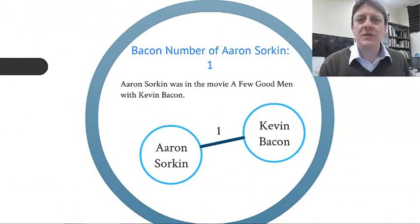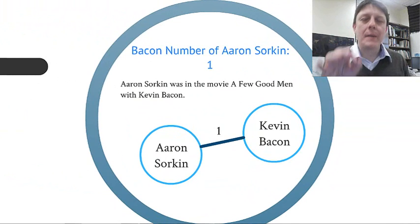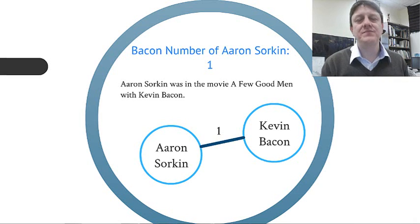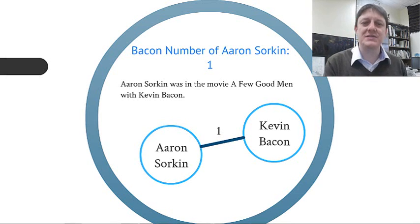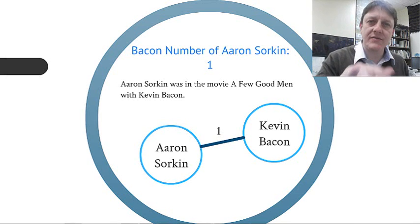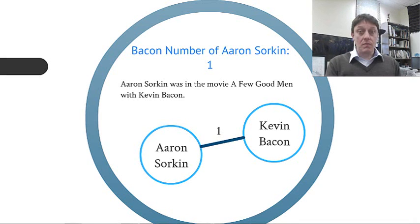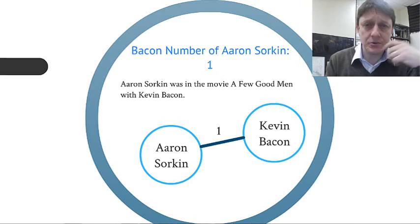Here's one person with a Bacon number of one: Aaron Sorkin. Aaron Sorkin was in the movie A Few Good Men with Kevin Bacon, not simply as the writer, but also as an actor actually in the movie. He played a man in a bar — an extra, granted, but nevertheless directly tied to Kevin Bacon through the tie 'has been in a movie with.' That's a network distance of one, with one intervening tie between the two.